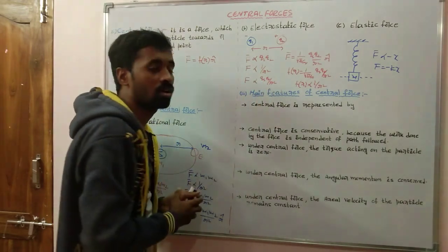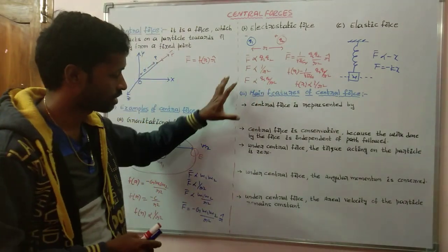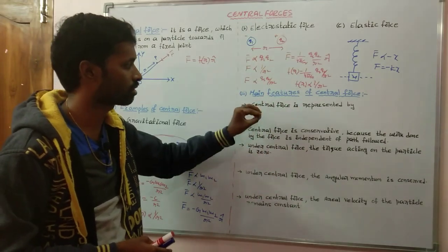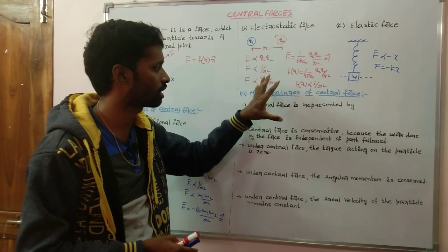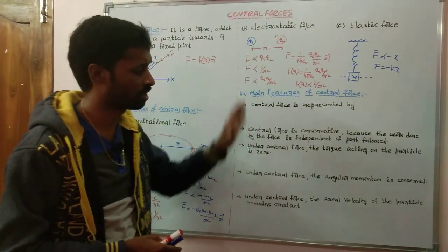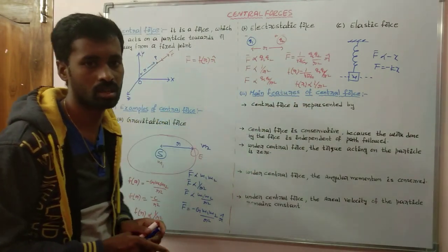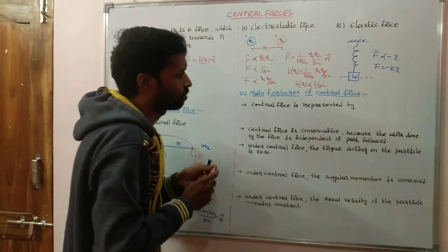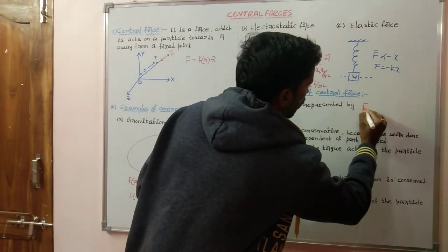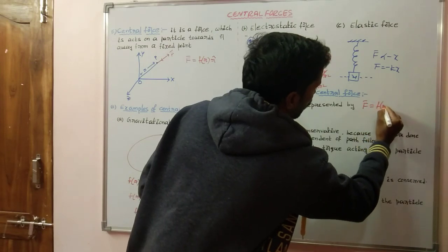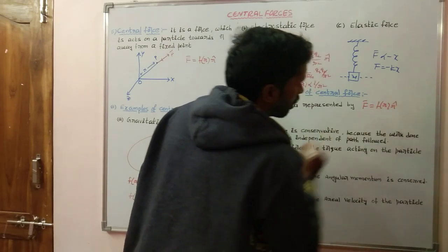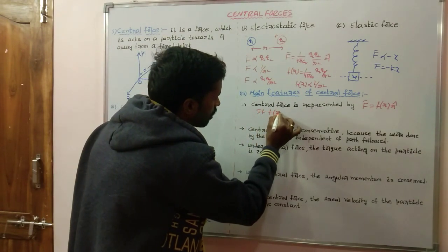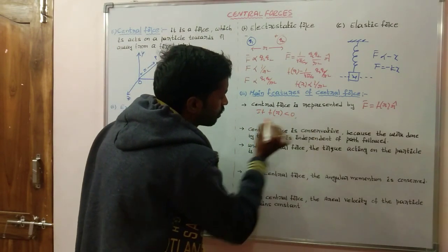Now, what are the main features or characteristics of central forces? This is the most important topic. The first characteristic is that central force can be represented by F bar = f(r)·r-cap. If f(r) is less than zero — that is, negative — then our central force is an attractive force.